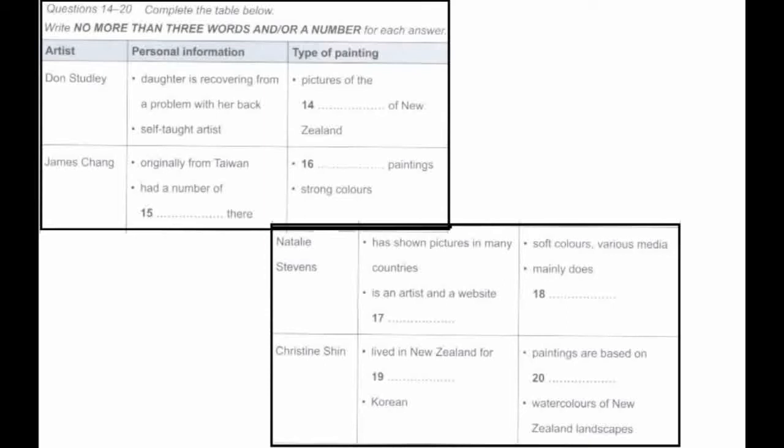One relative newcomer to New Zealand is James Chang, who came here from Taiwan nine years ago at the age of 56. Mr Chang had 13 exhibitions in Taiwan before he came to live here in Christchurch, so he's a well-established artist, and art has been a lifelong passion for him. His paintings are certainly worth looking at. If you like abstract pictures with strong colour schemes, you'll love them.